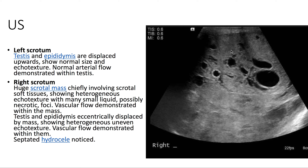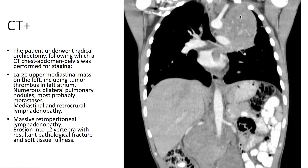The patient underwent radical orchiectomy, following which a CT of the chest, abdomen, and pelvis with contrast was performed for staging. We see a large upper mediastinal mass on the left, including a tumor thrombus in the left atrium.